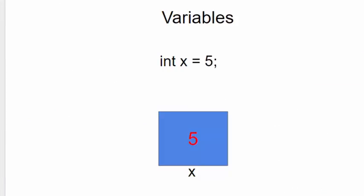We can think of a variable as a box. Here, a box is shown in blue, and its label or address is x, the name of the variable. Inside the box, we can store a value, in this case 5.